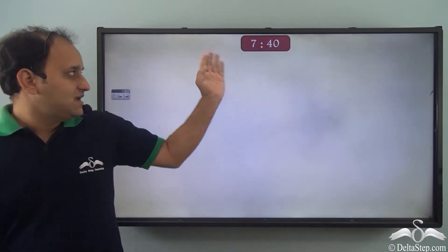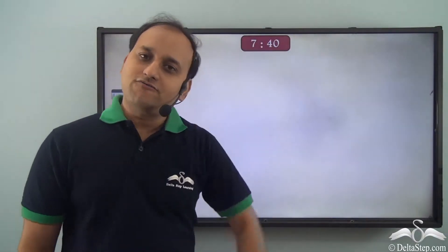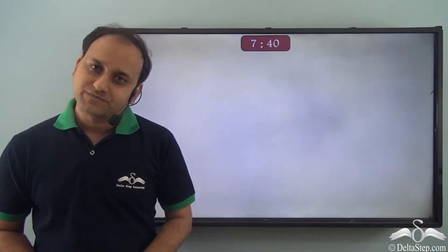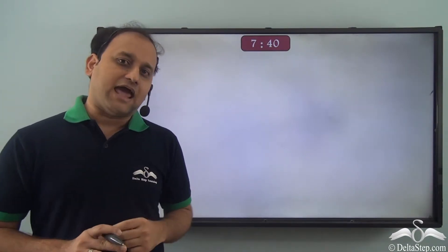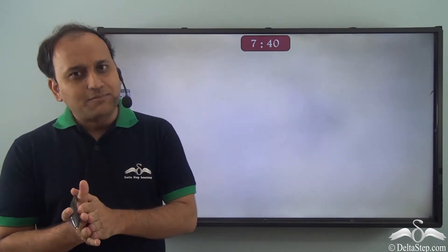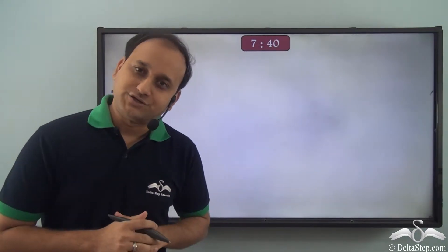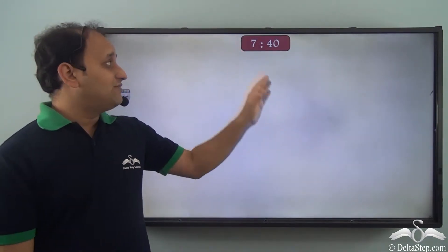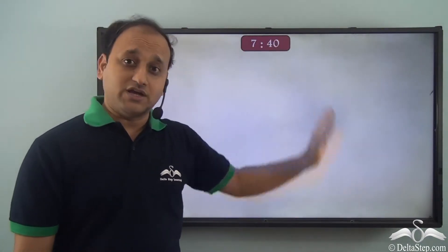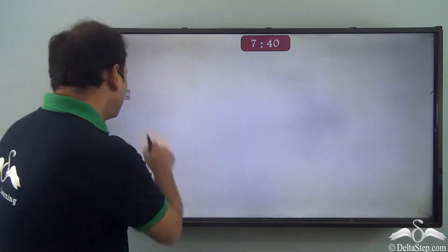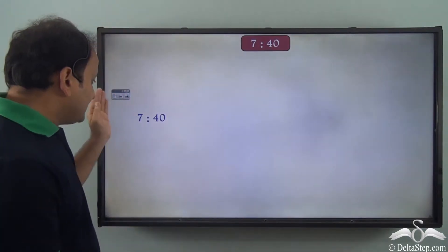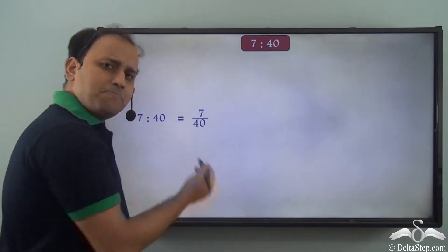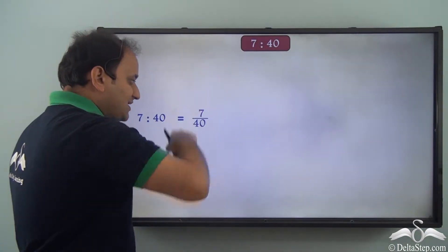What do we see here? We see a ratio 7 is to 40. Now what if we have to convert this value into percentage? Well, definitely we can. We have already studied about converting fractions to percentage and that is the principle we are going to apply here. So first of all we'll have to convert 7 is to 40 into a fraction. We know that 7 is to 40 can be written as 7 by 40, and this is the fraction which we needed.